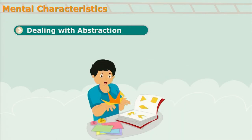Dealing with abstraction. Earlier at the childhood stage they were limited to only concrete things. But at this stage they are able to deal with abstraction — they can understand symbols, they can understand abstract things, they can comprehend it and can extract meaning out of it.